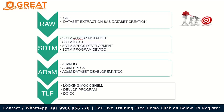Once the SDTM datasets are ready, the ADAM team is informed. They use SDTM as source data, follow the CDISC implementation guide, write specifications, create ADAM datasets, and perform QC. Once ADAM datasets are ready, the Tables Listings Figures team uses ADAM as source, reviews mock shells, writes programs, generates tables, listings, and figures, and validates them. This is the end-to-end flow.